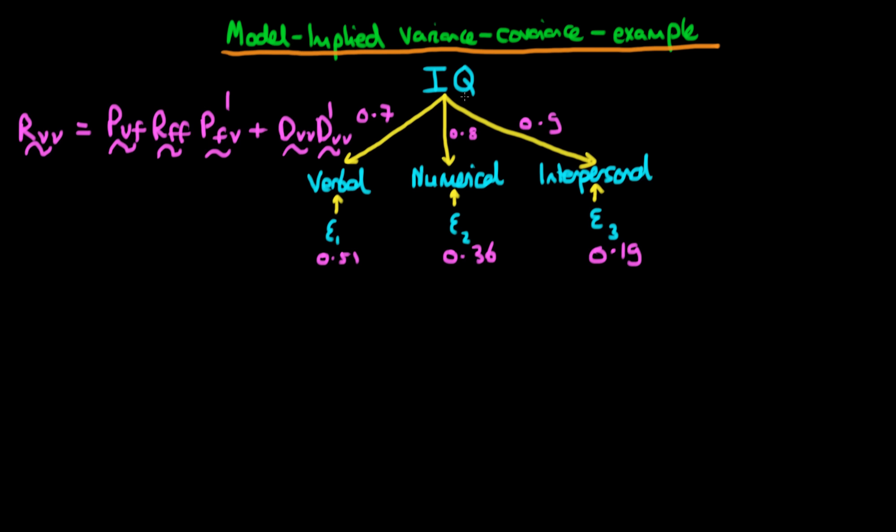So the example which I'm talking about here is we have one underlying latent factor, which is an individual's IQ, and that single factor loads on three observed variables. So an individual's level of verbal reasoning, numerical skills, and perhaps some measure of interpersonal ability as well.